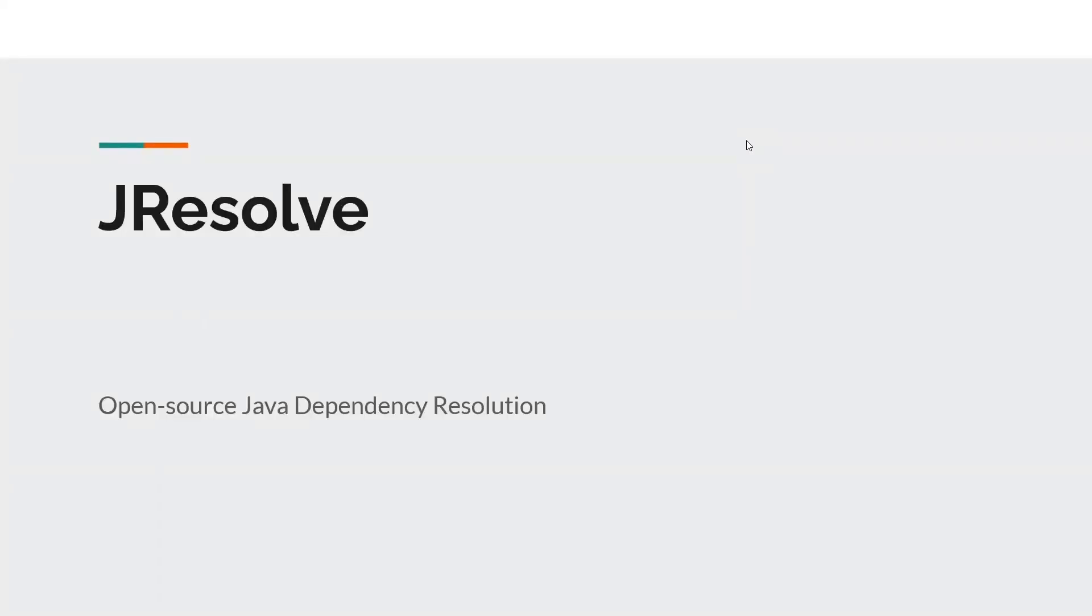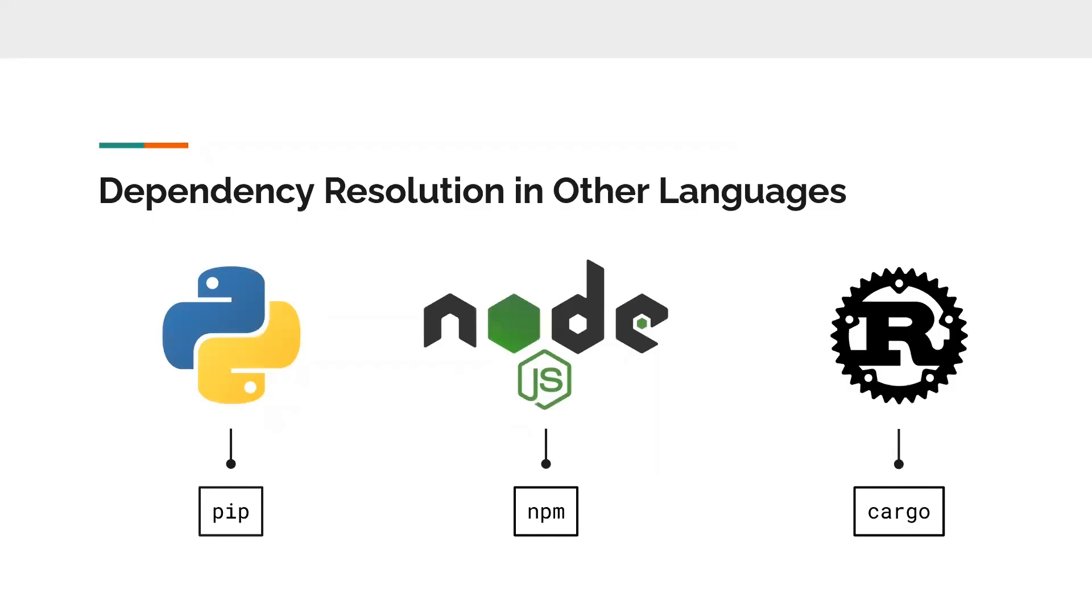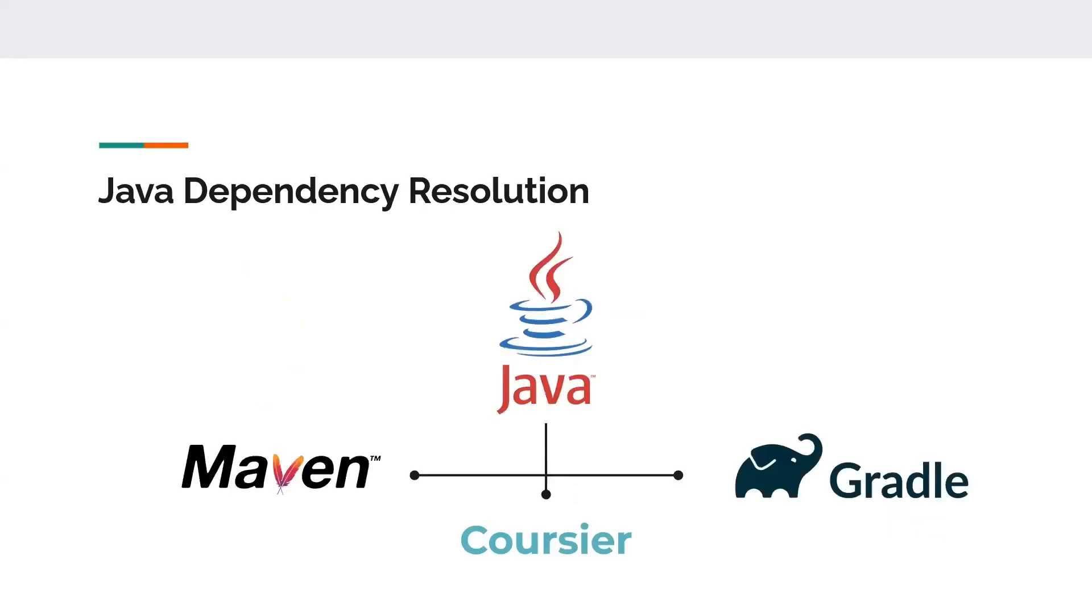JResolve is an open source dependency resolver for Java. Currently, Java has no built-in way to easily resolve dependencies from online repositories. When you compare it to dependency resolution for other languages, Python has pip, Node.js has npm, and Rust has cargo, which are all built-in. Whereas Java, you have to use Maven, Gradle, Coursier, or any other various tools that are available.